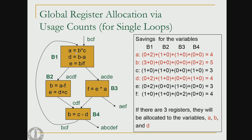For variable b: in b1 there are three uses before any definition, so first cost is 3; no computation so second cost is 0. In b2, no usage of b before definition and b is not live on exit — both costs are 0. Same is true for b3. In b4, there are no usages of b before definition, but b is computed in the block and live on exit, so the second cost is 2. Total cost for b is 5. We can similarly compute the cost for c, d, e, and f.